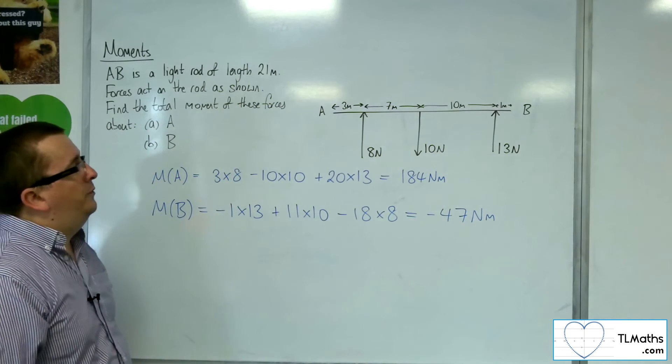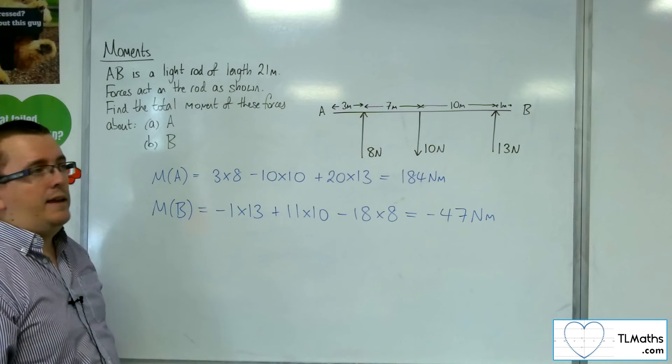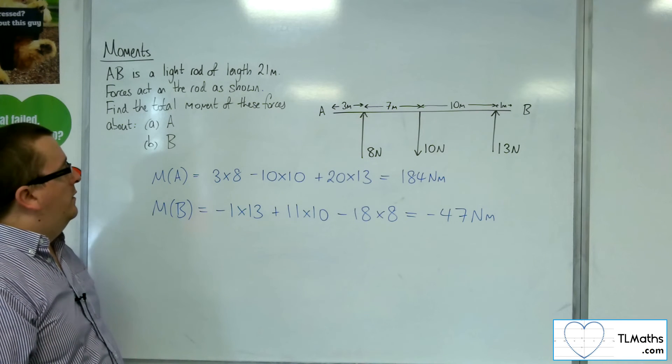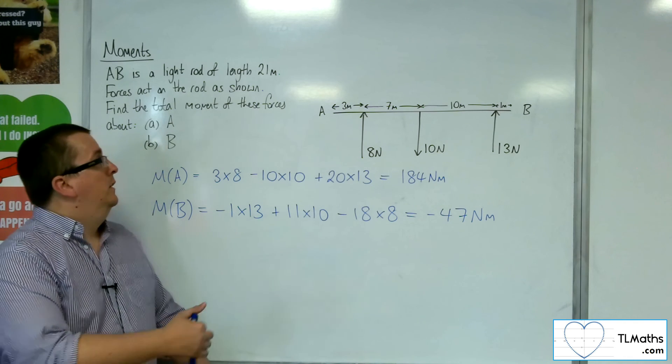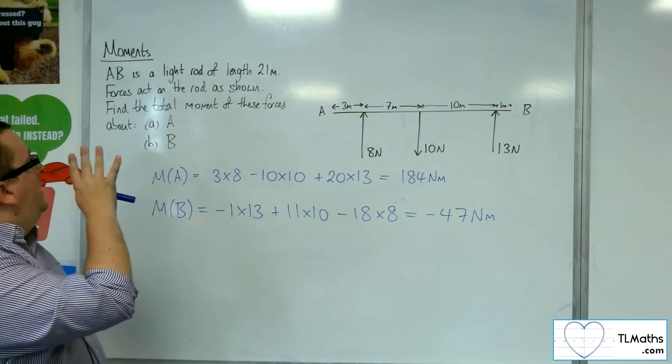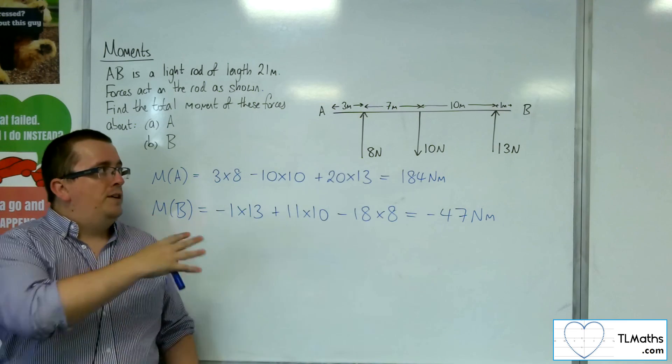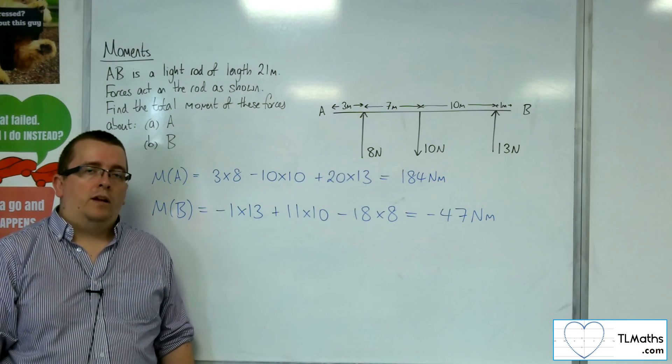And that's really due to those forces being a little bit closer to B, as opposed to how far they are away from A. So that's how we can deal with a rod and finding the moment about a couple of points there.